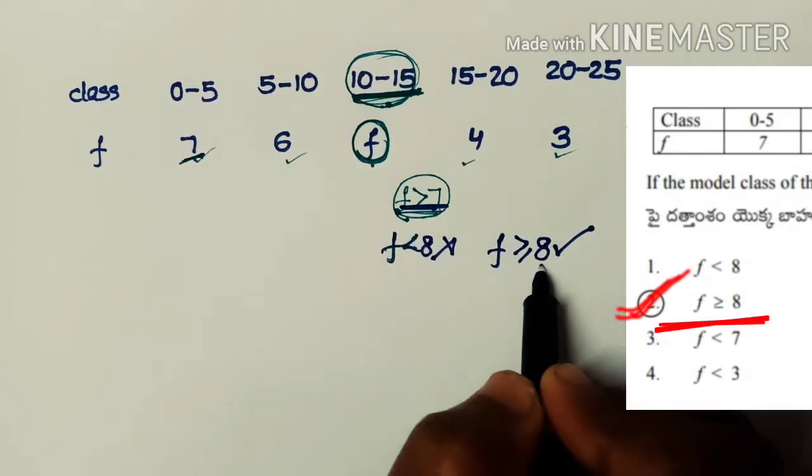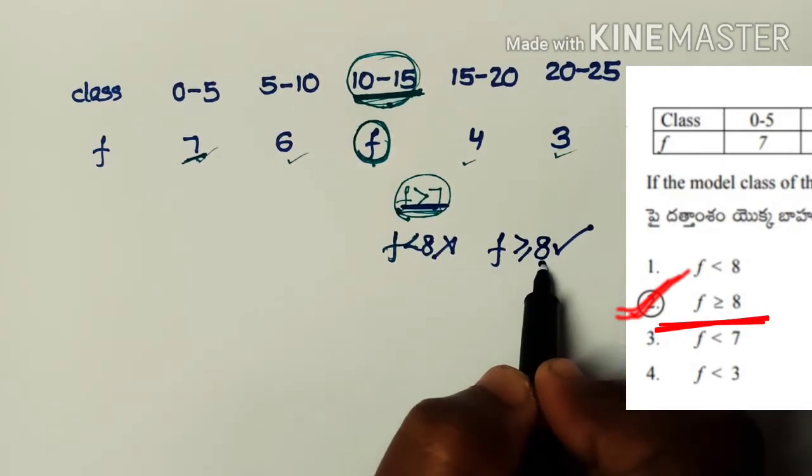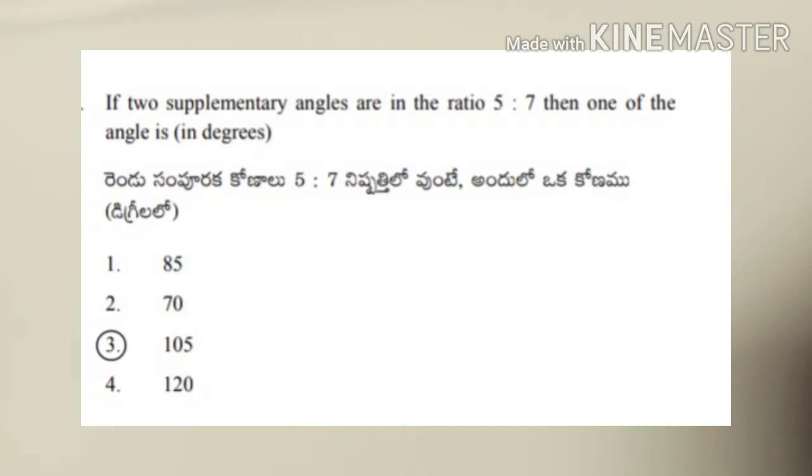f greater than 7 means f greater than or equal to 8, so the second option is the correct answer.